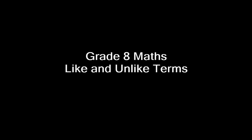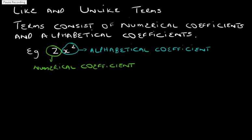Today we are going to be discussing like and unlike terms. Terms consist of numerical coefficients and alphabetical coefficients. If we look at the expression 2x squared, 2 is the numerical coefficient and x squared is the alphabetical coefficient.